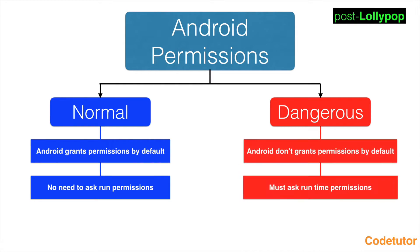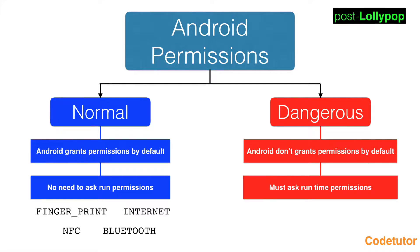Dangerous permissions are those which are also declared in the manifest file, but they have to be confirmed by the application during the runtime. Android doesn't grant these permissions by default, and at runtime the application needs to ask these permissions from the user. In both cases, the permissions have to be declared in the manifest file.